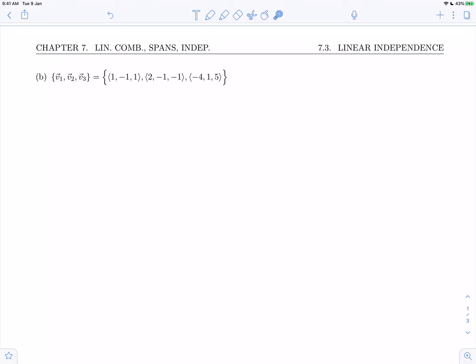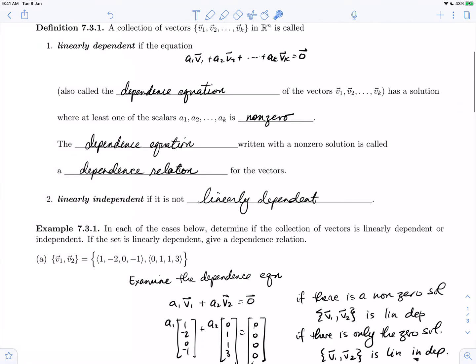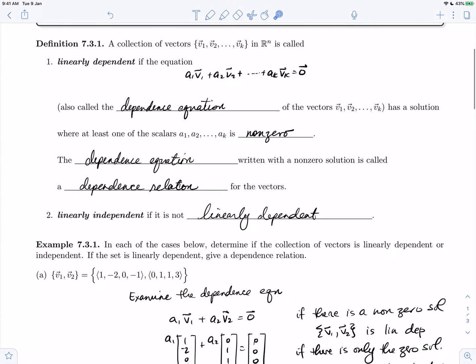In this video, we're going to do example 7.3.1b. We had done part A in a previous video, as well as looking at the definition of linear dependence and independence.